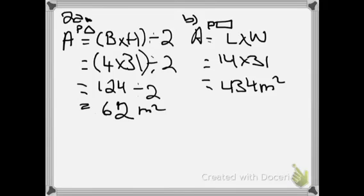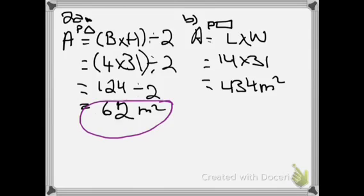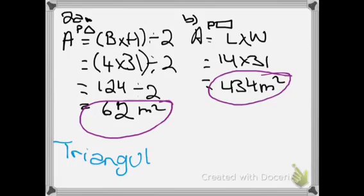The first area is for the triangle: base times height divided by 2. So 4 times 31 divided by 2. 4 times 31 equals 124, divided by 2 gives us 62 meters squared. For part B, finding the area of a rectangle: length times width. The length is 14, the width is 31, so 14 times 31 gives us 434 meters squared. This was for the triangular part of the property.